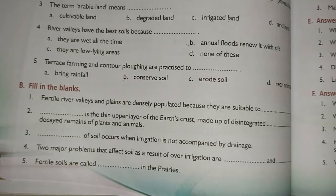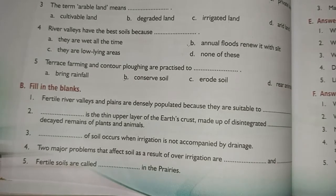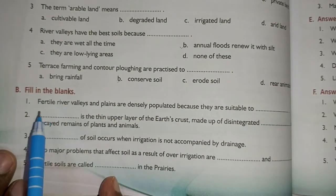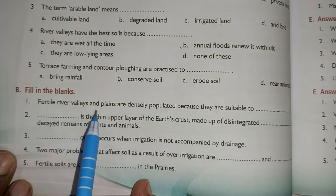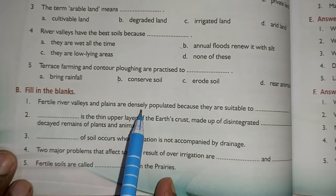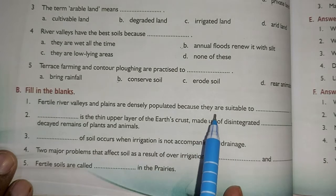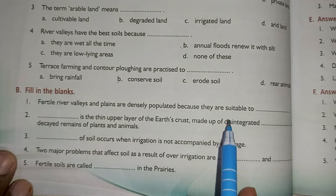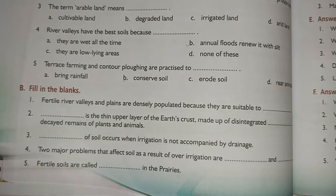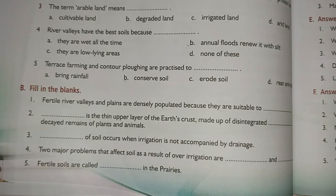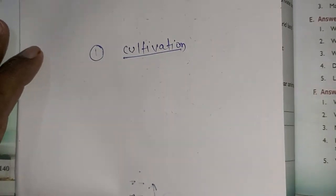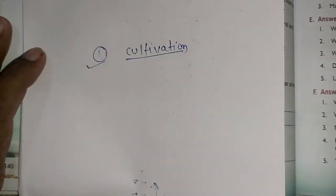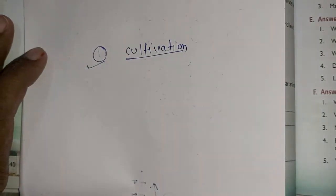Now we will fill in the blanks, which is very important. First: fertile river valleys and plains are densely populated because they are suitable for what? The answer is agriculture or cultivation — they are suitable for cultivation.